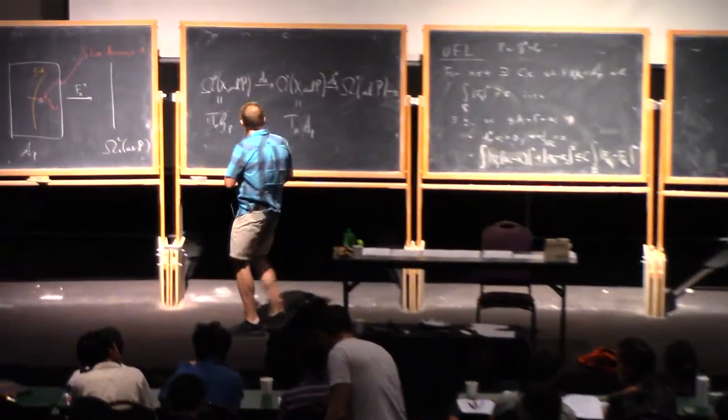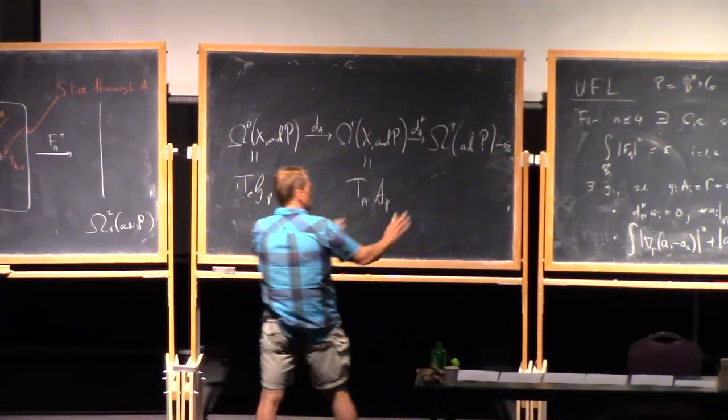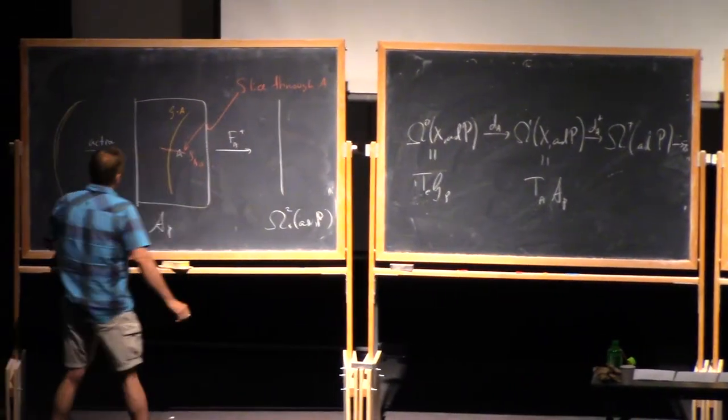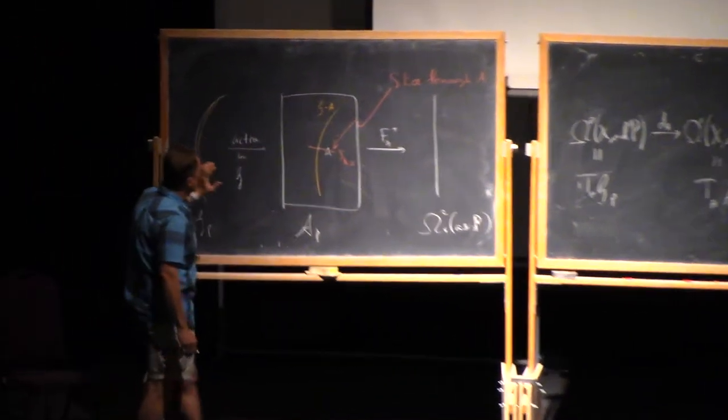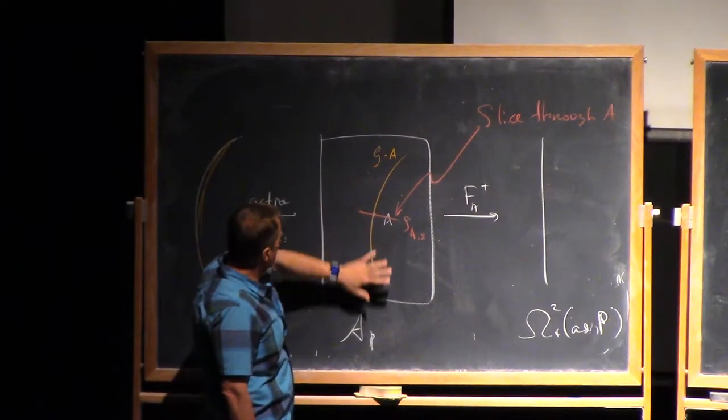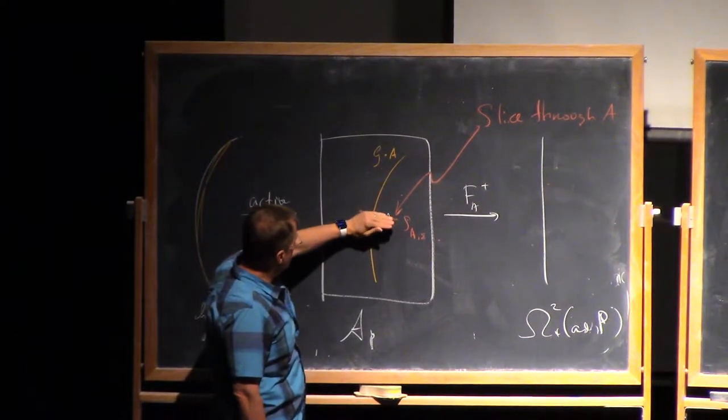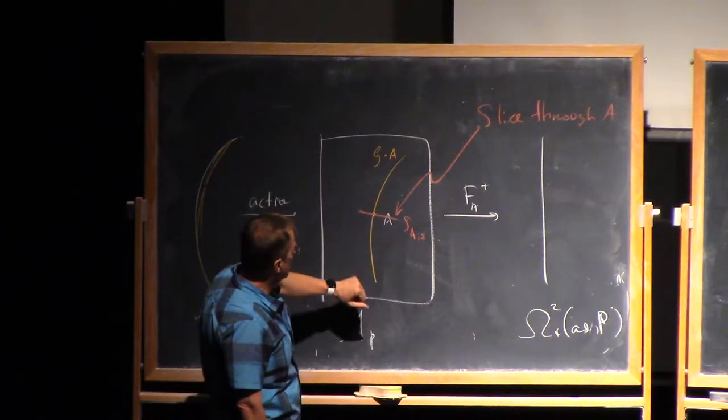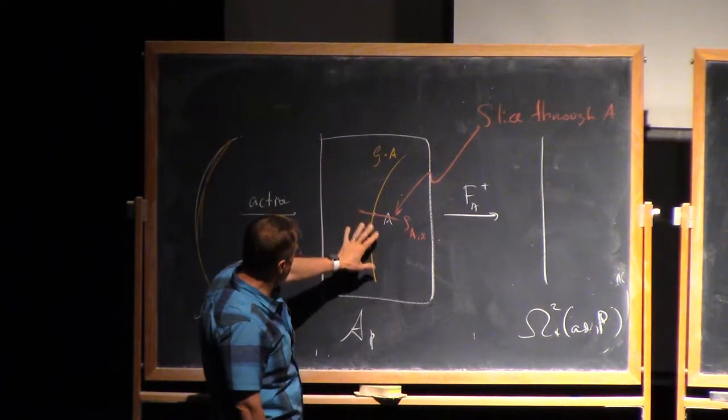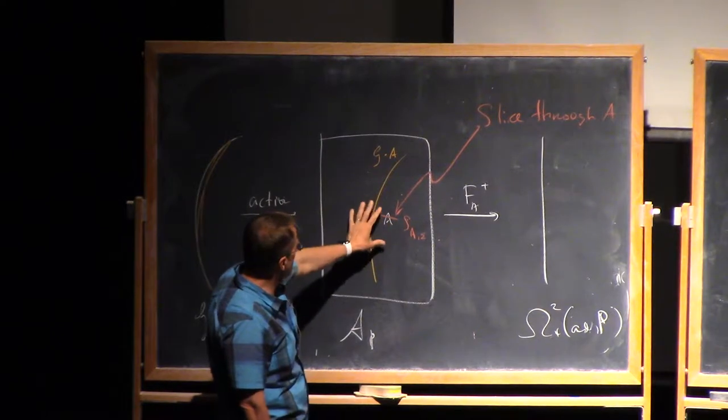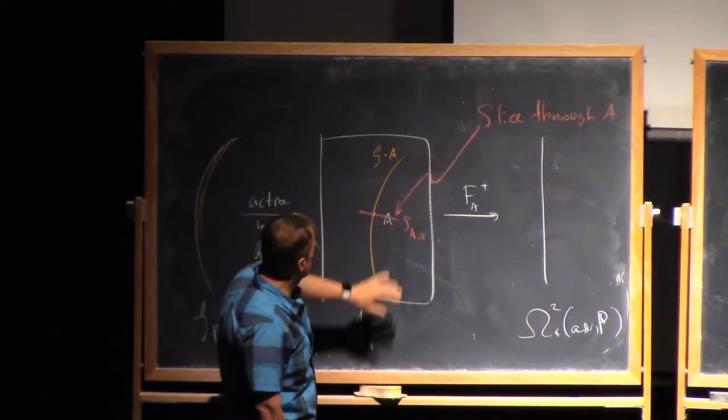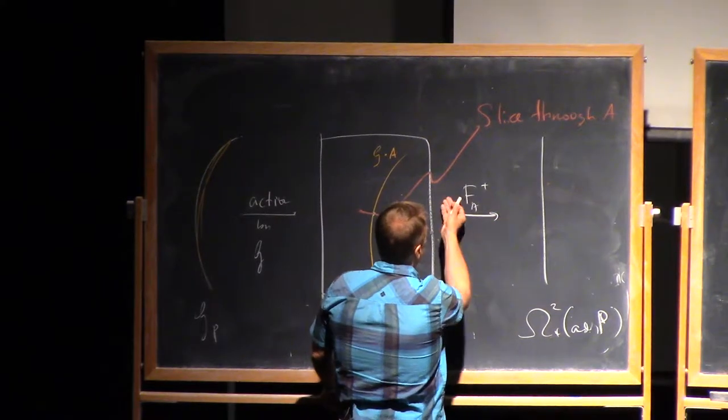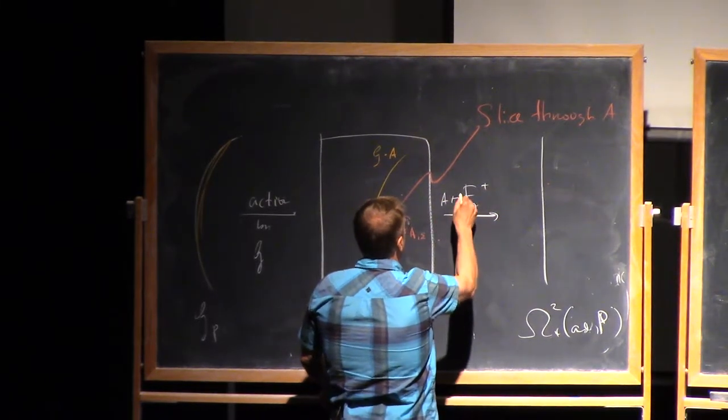There's one thing I wanted to say before we get back to the compactness. We saw that there were slices for the action of the gauge group, which gives the quotient space a nice structure, and then we can restrict that picture to the space of anti-self-dual connections, which are the zero set of the map that sends A to F_A plus.